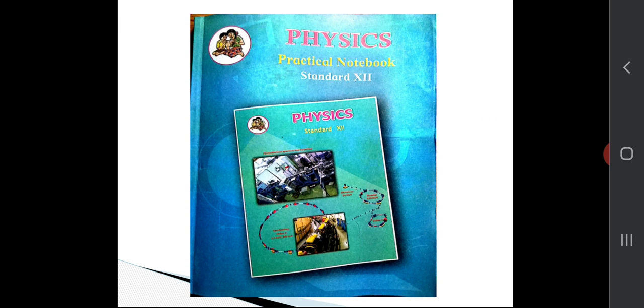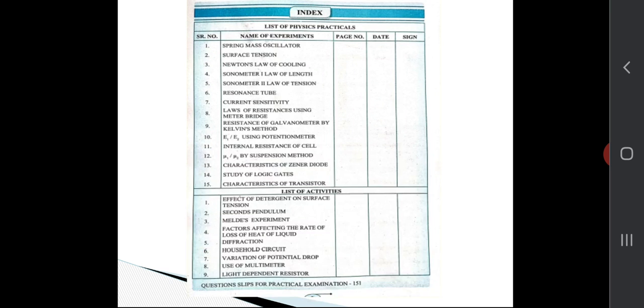Lastly, you will write conclusion, result, and precautions on the third page. This is how we will write the physics journal. This kind of physics journal is available in the market, but for your convenience, this is the board handbook, and we are providing you the handbook from college only.